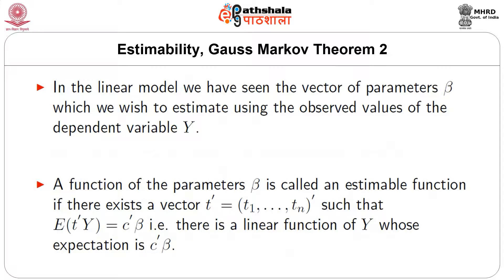In the linear model, we have the vector of parameters beta which we wish to estimate using the observed values of the dependent variable y. A function of the parameters beta is called an estimable function if there exists a vector t-transpose equal to (t1 to tn) transpose such that the expectation of t-transpose y equals c-transpose beta. That is, there is a linear function of y whose expectation is c-transpose beta.